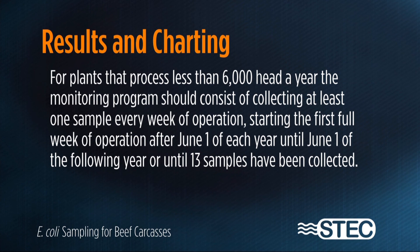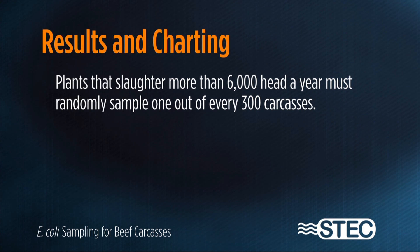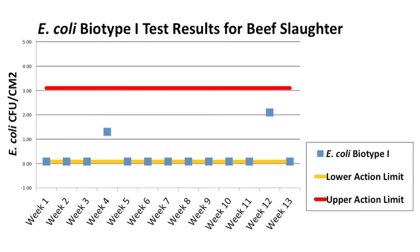For plants that process fewer than 6,000 head a year, the monitoring program should consist of at least one sample every week of operation, starting the first full week of operation after June 1 of each year until June 1 of the following year, or until 13 samples have been collected. Plants slaughtering more than 6,000 head a year must randomly sample one out of every 300 carcasses. Corrective actions must be taken if any of the 13 samples exceed an upper control limit of 3.1 CFU per cm², or if three of the 13 samples fall between the lower control limit of less than 0.08 CFU per cm² and the upper control limit of 3.1 CFU per cm².